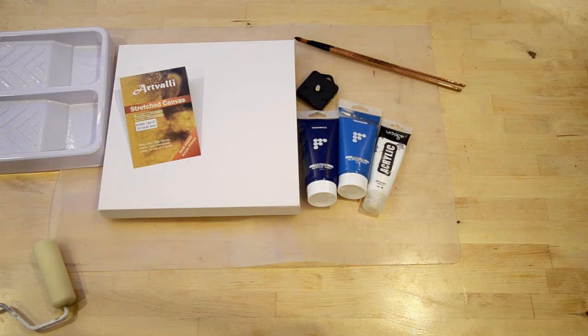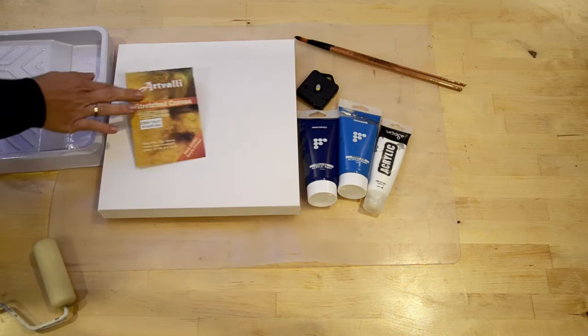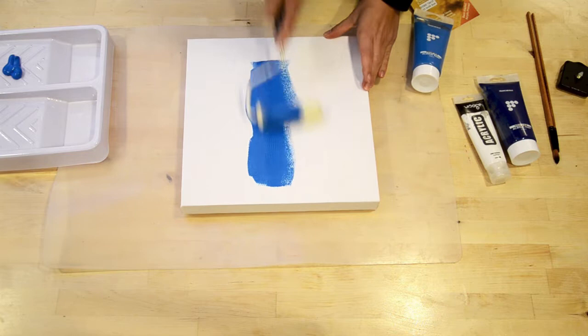You will need acrylic paint of your choice, a paint roller, and a piece of cardboard to support the DIY clock set.